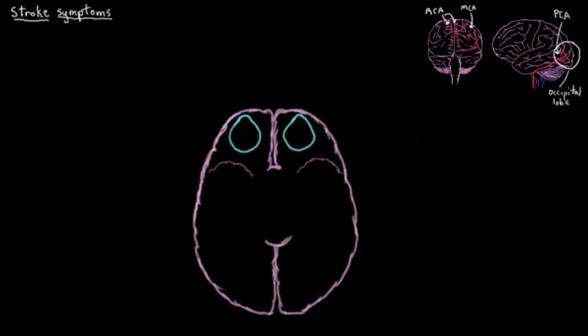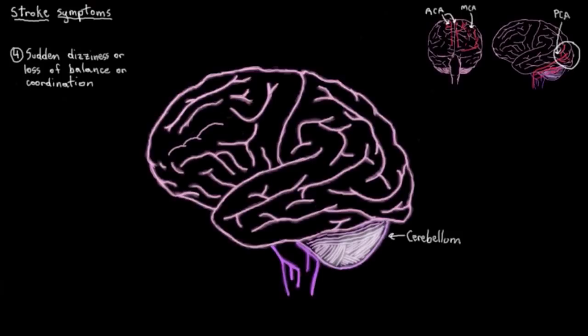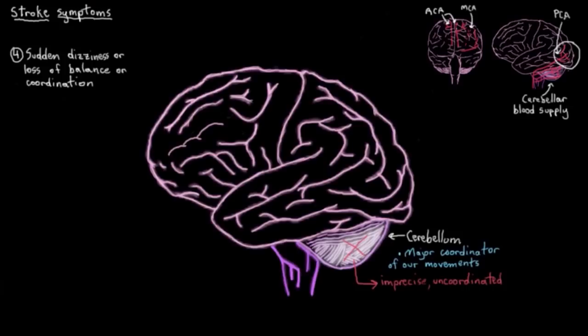Alright, what's next? Another common set of symptoms are ones to do with balance. So you get this sudden feeling of dizziness or loss of balance or coordination. So you might have trouble, say, walking. And this can happen if you have a stroke in your cerebellum, so a substantial enough blockage in at least one of the three main arteries that supply it with blood. And why would this result in dizziness or loss of balance? Well, because the cerebellum is the major coordinator of our movements, if something happens to it, we start to get imprecise and uncoordinated. And we end up having poor timing to our movements.